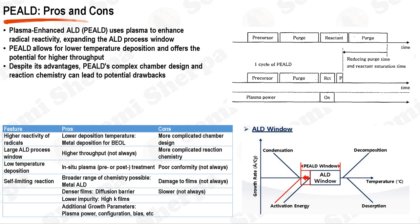However, the complexity and precision of the ALD process can lead to high manufacturing costs and difficulties in achieving consistent results. In the context of plasma-enhanced atomic layer deposition, PE-ALD, this process employs plasma to increase the reactivity of radicals, allowing for a larger ALD process window and lower temperature deposition. The plasma is only activated during the reactant exposure step to preserve the self-limiting nature of the ALD reactions. One of the advantages of PE-ALD includes the potential for higher throughput, lower deposition temperatures, and in situ plasma treatments before or after deposition. The films produced by PE-ALD tend to be denser, making them effective as diffusion barriers, and PE-ALD can result in lower levels of impurities, particularly advantageous for high-K dielectrics.